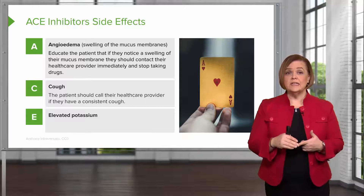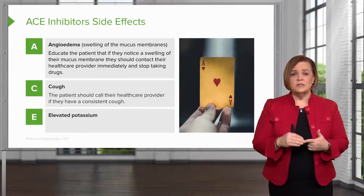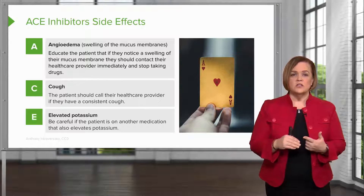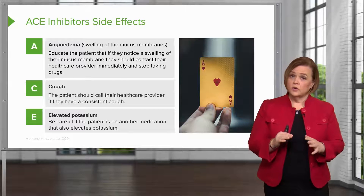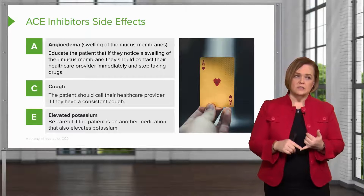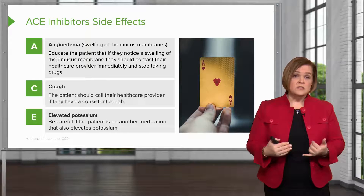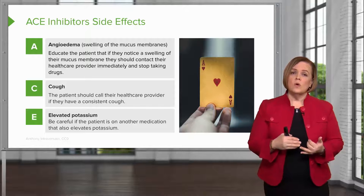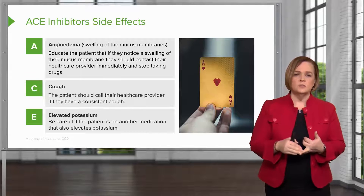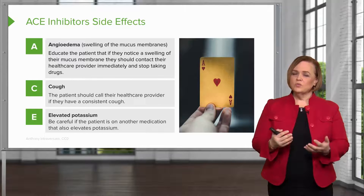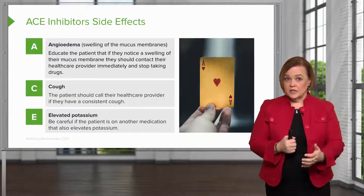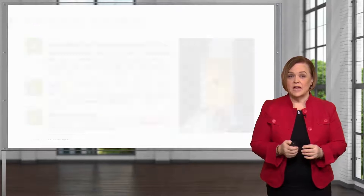The last one — E — is for elevated potassium. This becomes an issue if you're on any other medication that also elevates your potassium. If a patient already has elevated potassium from another disease process, be very careful about adding other medications that also elevate potassium. You don't want to put a patient on two medications that have the same side effect, especially one like elevated potassium.